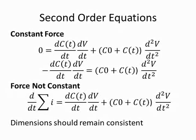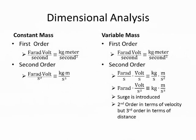If in the mechanical system we have forces that are not constant, then we will have to sum those forces on one side, take the derivative of them, and get a different result. In any event, the dimensions should remain consistent after the transformation from first order to second order. Now I am going to dive into the dimensional analysis of my system equations. I am doing this because we can get useful information from this exercise that will enable us to apply these equations more effectively.